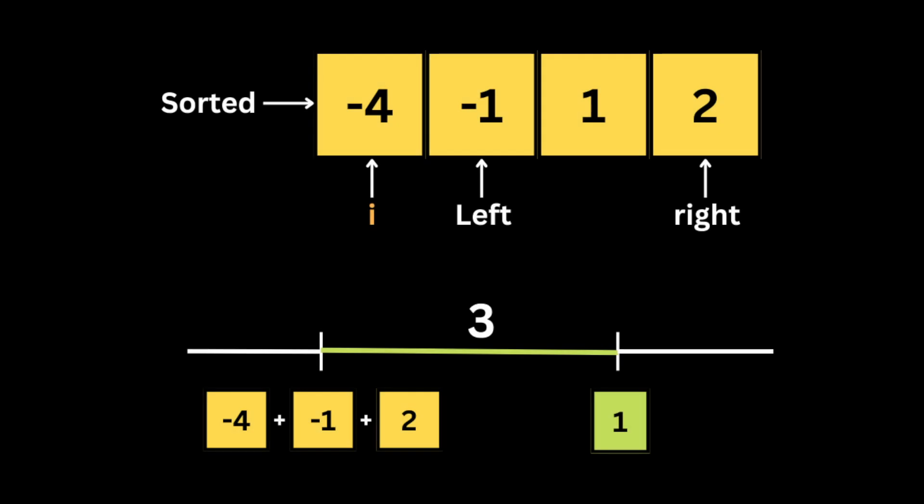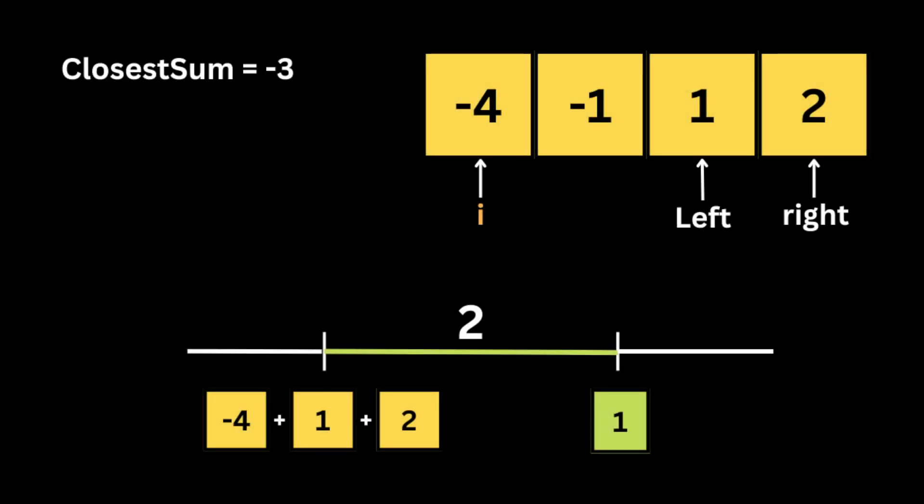We sum up the three numbers — the first sum equals minus three. We check if the sum equals the target; if true, we return the sum. Here the total is not equal to one, so we calculate the absolute difference between the current sum and the target. The absolute value tells us how far away that number is from the target on the number line. We store the sum in a variable to keep track of the closest sum, then check if the sum is less than or greater than the target: if smaller, move the left pointer by one; otherwise, reduce the right by one.